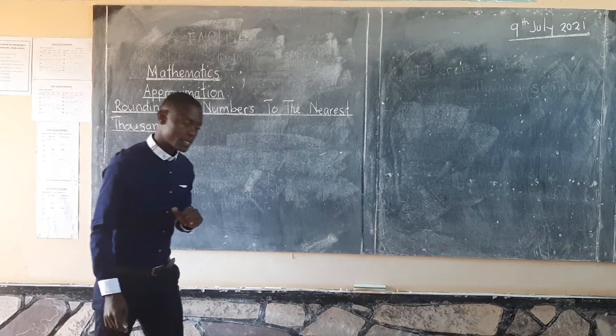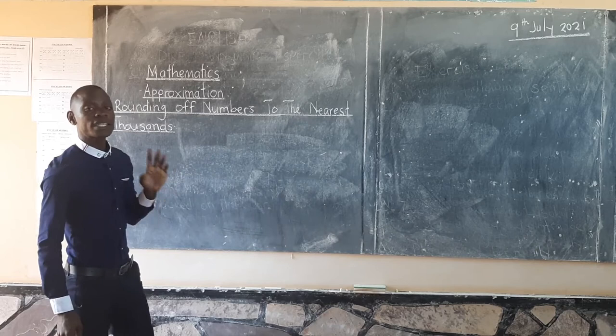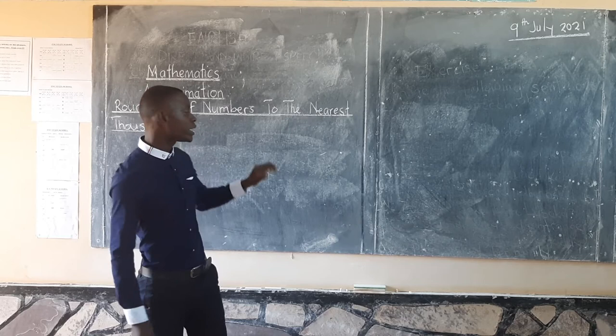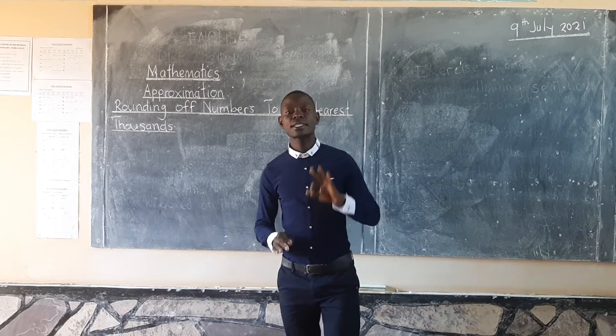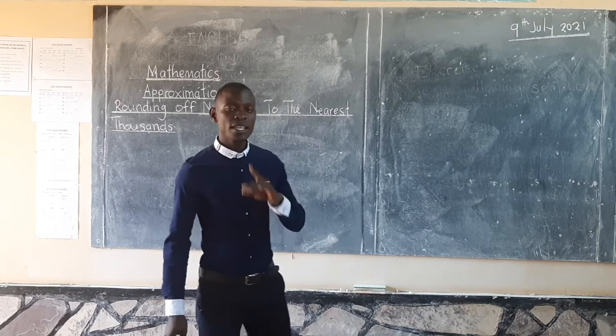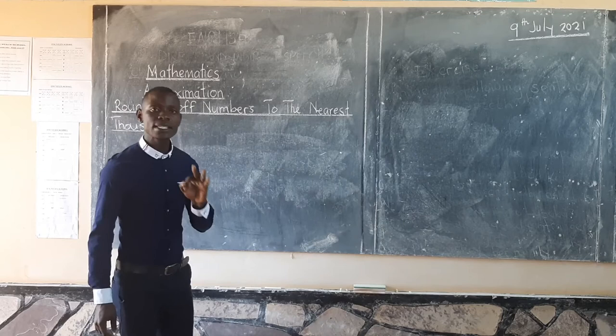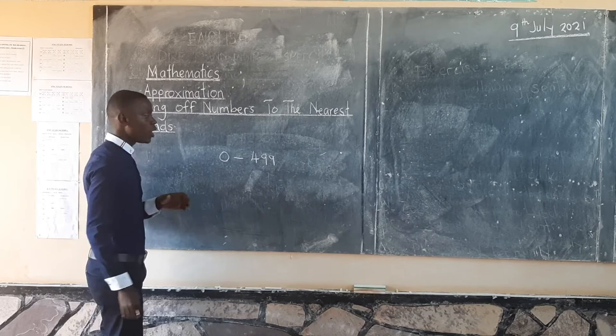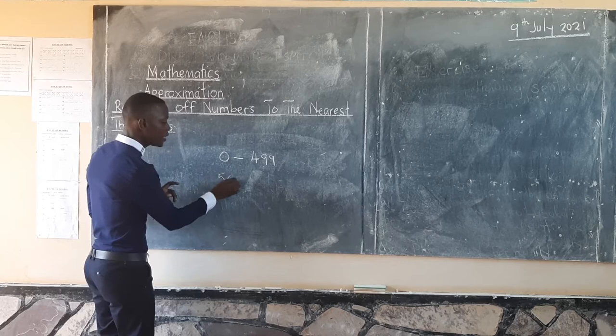Here is what we look at. The first step says: you look at the last 3 digits. When we say digits, we mean numbers. The first step when rounding off numbers to the nearest 1,000 is to look at the last 3 digits. When you are done, the second step says: you check.